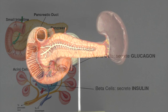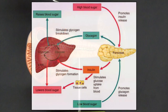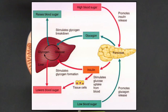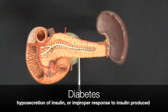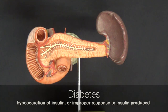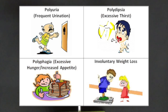The first is glucagon, which is secreted by the alpha cells, and insulin, which is secreted by the beta cells. Glucagon acts on the liver to raise blood glucose levels. Insulin targets the liver, skeletal muscles, smooth muscles, as well as adipose cells to lower blood glucose. A hyposecretion of insulin is known as diabetes mellitus, characterized by the three polys: polydipsia, polyphagia, and polyuria.